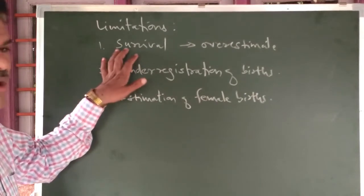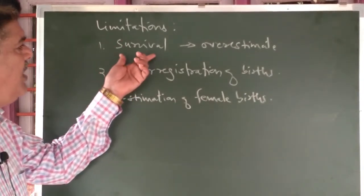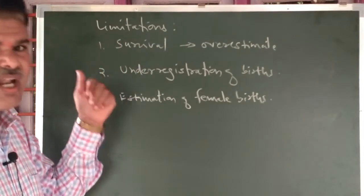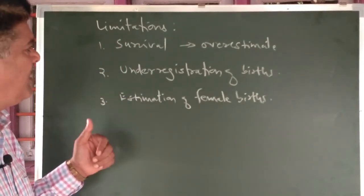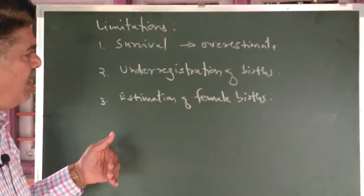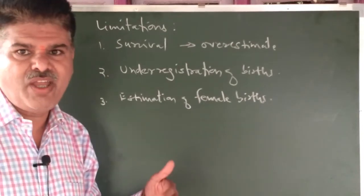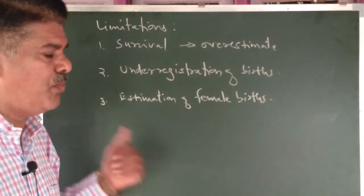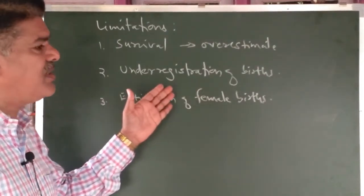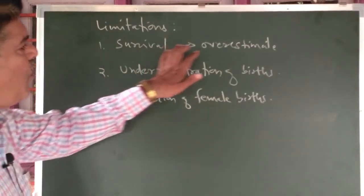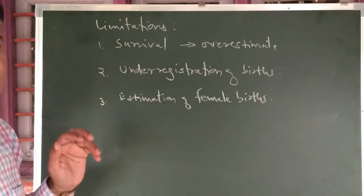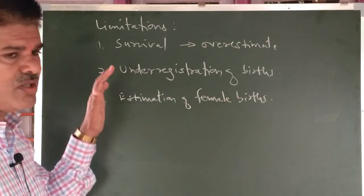One major or serious limitation of Gross Reproduction Rate is the survival of a girl child. In GRR, we are assuming that a girl child which is born today is going to survive up to her childbearing age group. But in reality, that is not true. Some deaths have taken place in between, so GRR overestimates the growth rate. That is one serious problem — the survival factor of Gross Reproduction Rate.